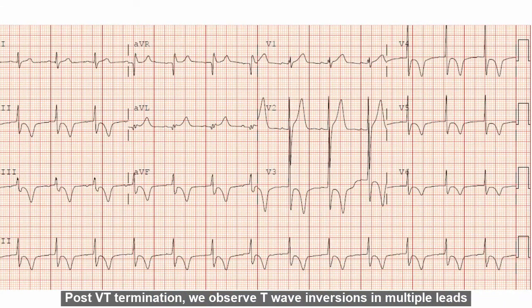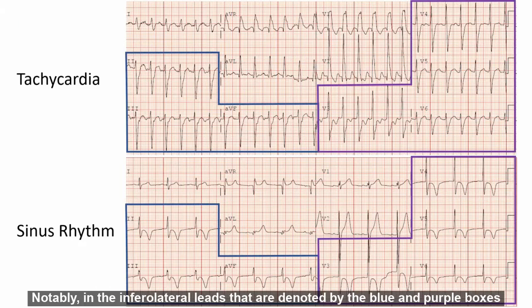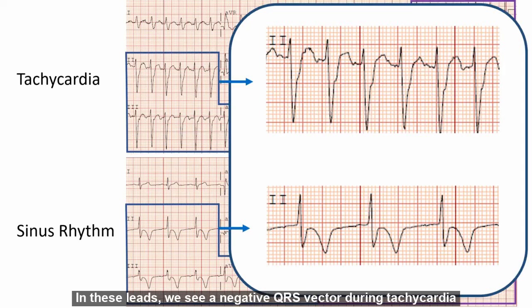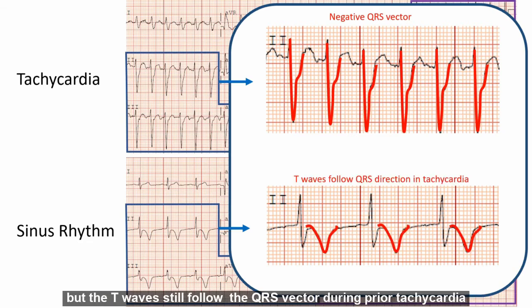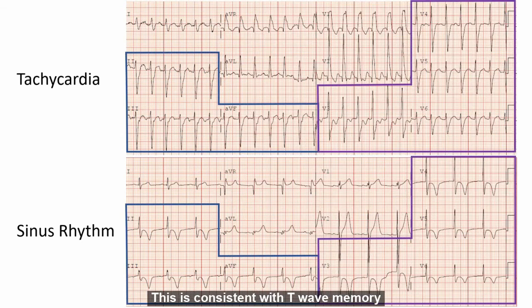Post VT termination, we observe T wave inversions in multiple leads, notably in the inferior lateral leads that are denoted by the blue and purple boxes. In these leads, we see a negative QRS vector during tachycardia. Upon sinus rhythm restoration, the QRS vector has reversed and is upright, but the T waves still follow the QRS vector during prior tachycardia. This is consistent with T wave memory.